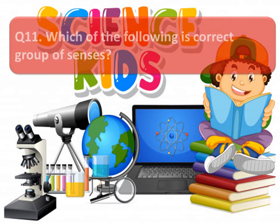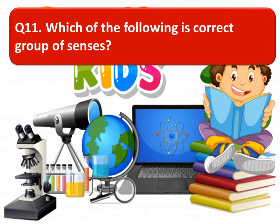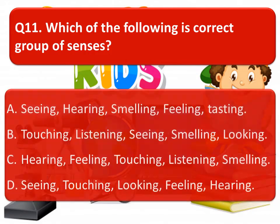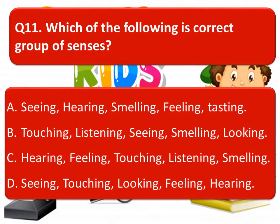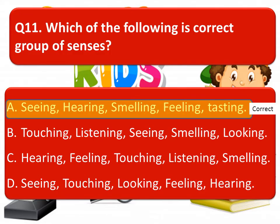The next one is: which of the following is the correct group of senses? You can pause the video to think about the correct answer. The correct answer is option A — seeing, hearing, smelling, feeling, and tasting is the correct group of senses.